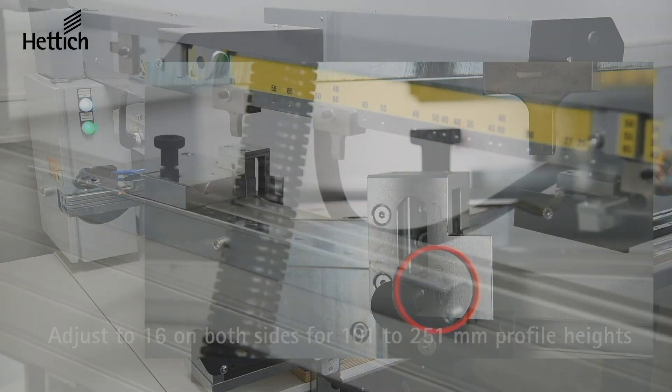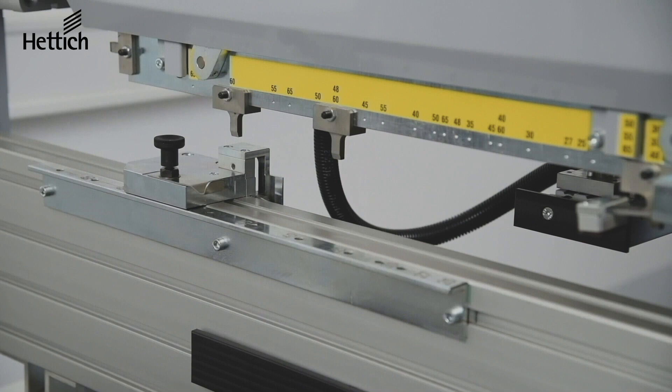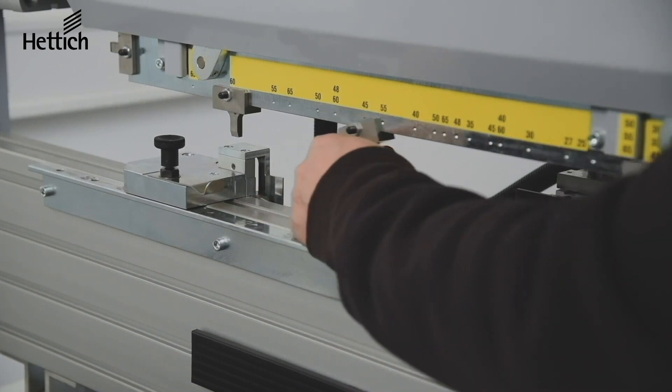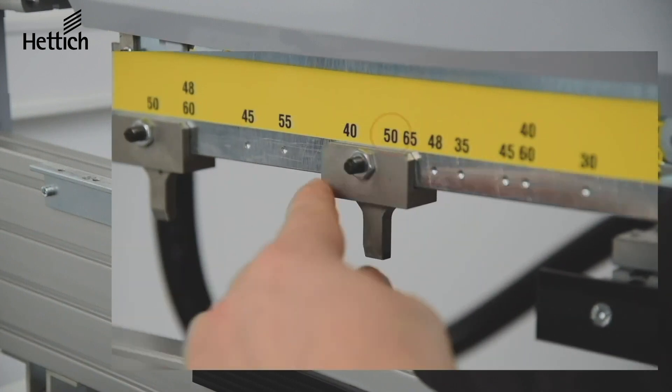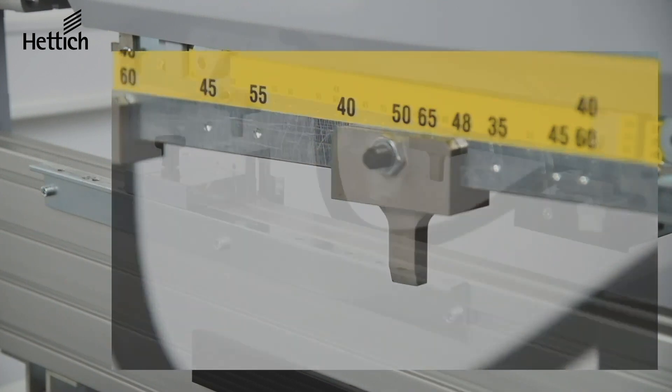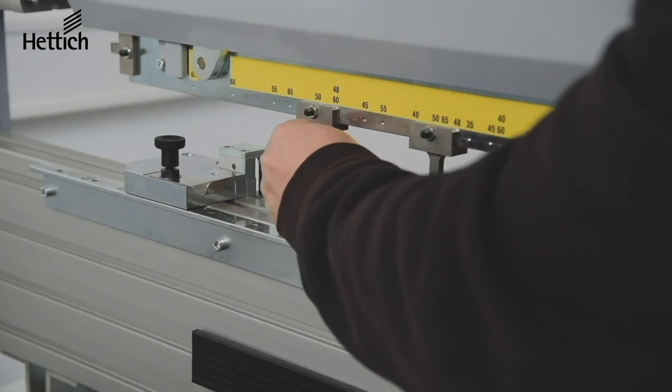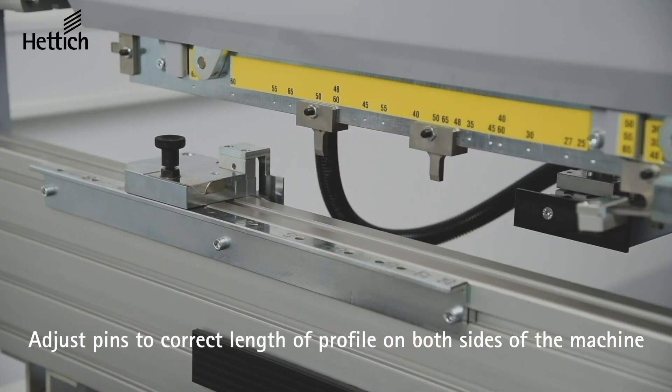You are now ready to adjust the insertion pins to the correct length. Simply slide the pins to the appropriate length which is clearly marked on the yellow scale and has indentations at each length to hold the bracket in place. Again this must be done on both sides of the machine.